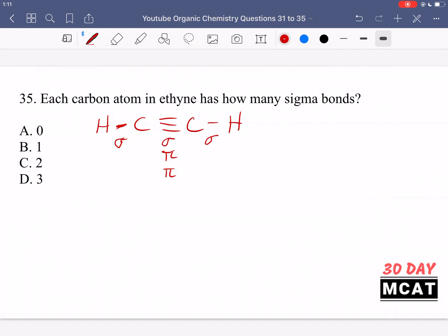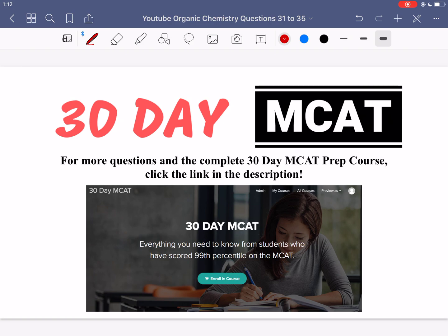We have another sigma bond over here. We're asked how many sigma bonds for each carbon. Overall the molecule has three sigma bonds, but for each carbon it has one sigma bond between the two carbons and another sigma bond with the hydrogen that's bonded to it. So two is the correct answer here.